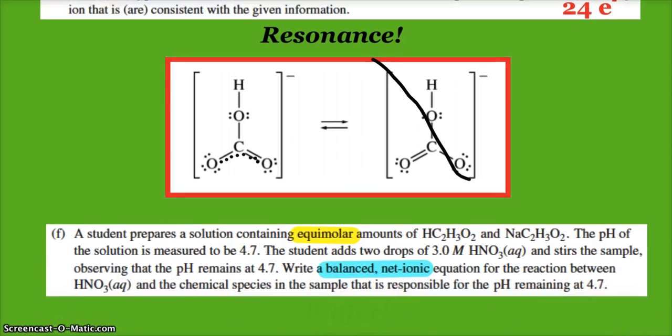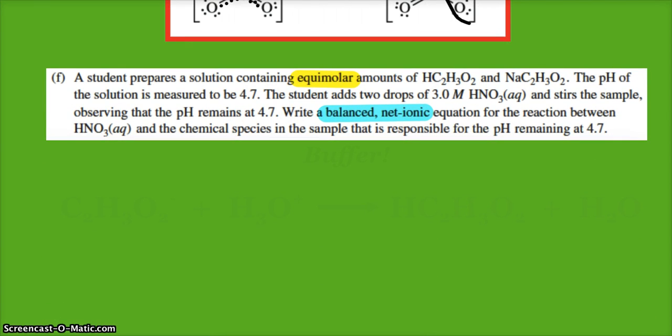All right, and then the last part: a student prepares a solution containing equimolar amounts of acetic acid and sodium acetate. So I've got a weak acid and its conjugate base, the salt—smells like a buffer. And that's what we see here. The pH of the solution is 4.7, weak acid. Student adds some strong acid, nitric acid, stirs, and the pH stays at 4.7.